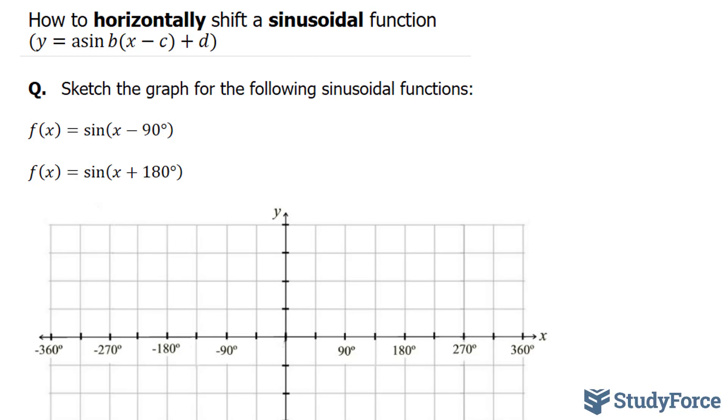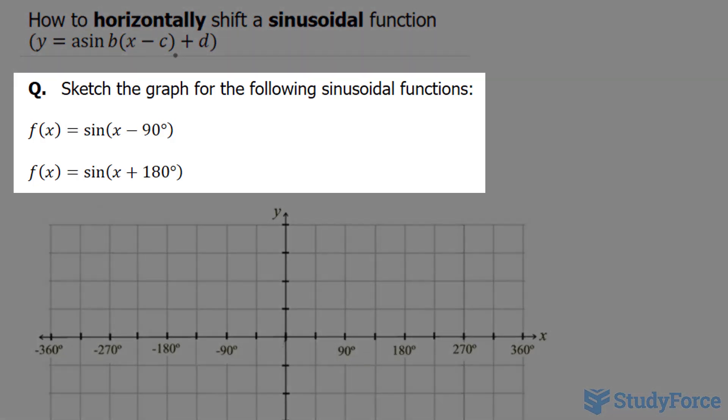What's different about this video from the previous is that I'm using a common template, whereas before I was using a different template. This template is something that you will likely see in most textbooks. The question here asks, sketch the graph for the following sinusoidal functions. We have f(x) equals sin bracket x minus 90 degrees, and f(x) equals sin x plus 180 degrees.